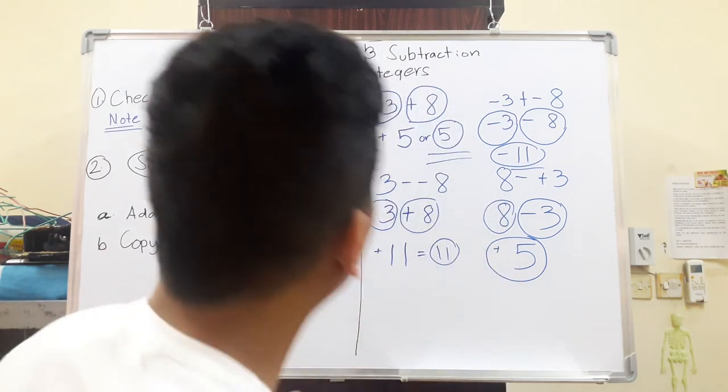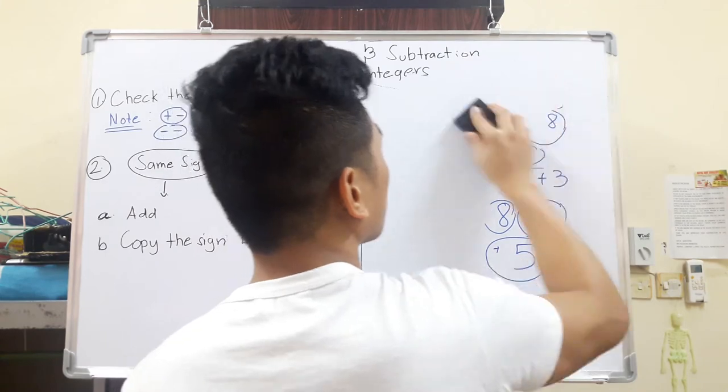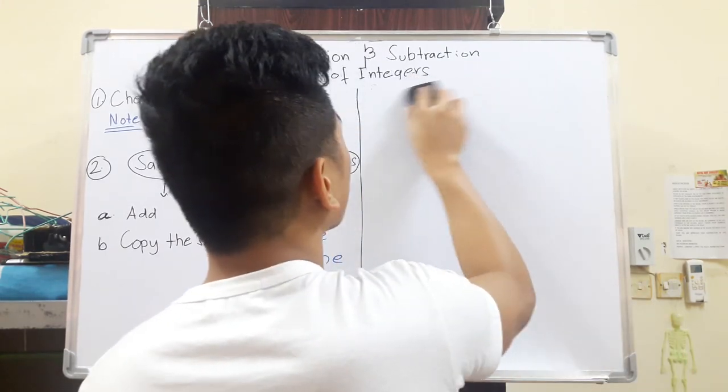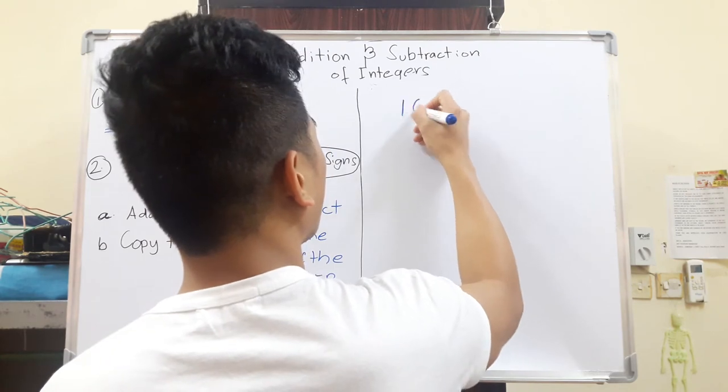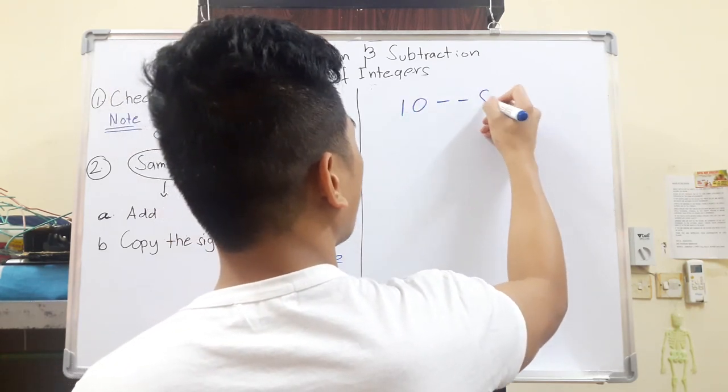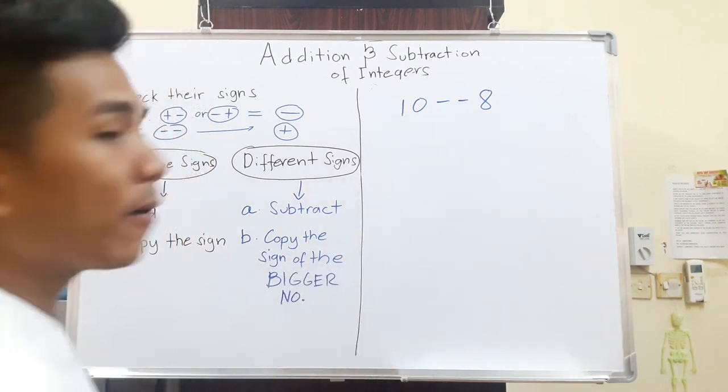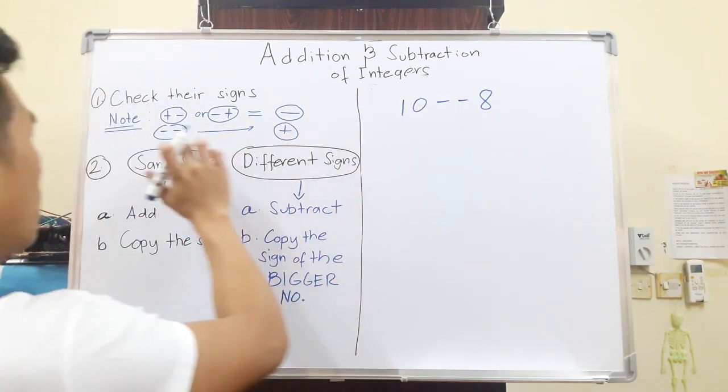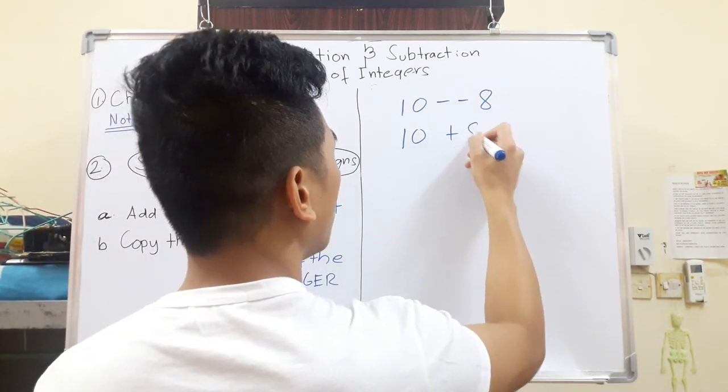Now, let's just have a few more examples. For example, we have 10 minus minus 8. Again, since I see two signs that are after each other, we have to simplify them. Minus minus will just turn into a plus. So it is 10+8.